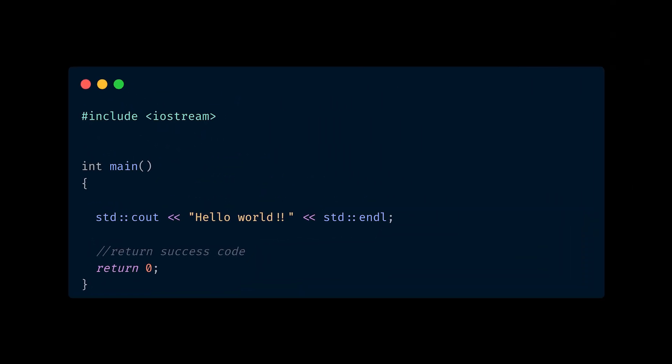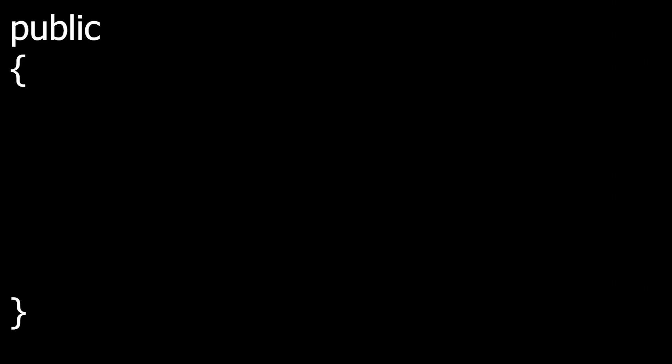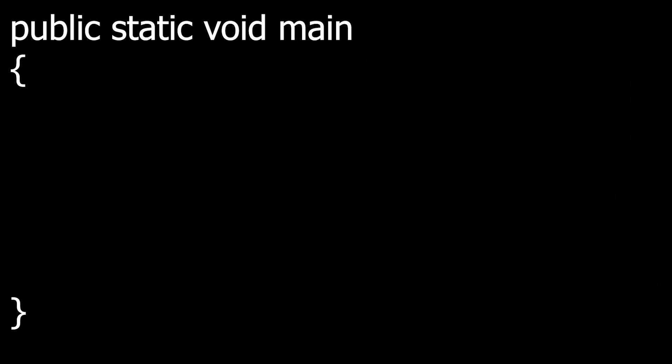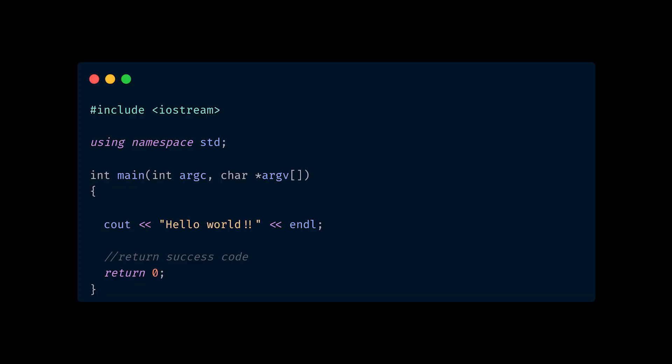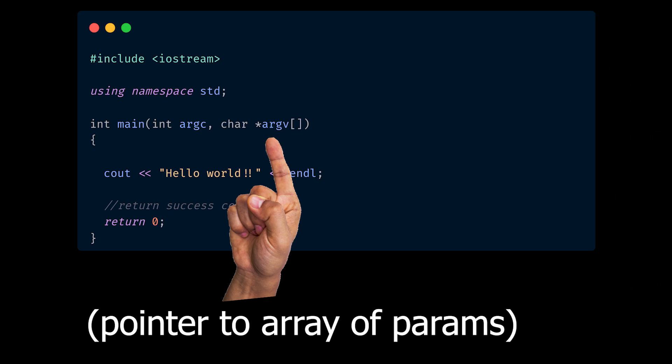Here's the main function of a C++ file. To write the main function — it is public static void main string — just kidding, I almost got you there. The main function is just a function called main, and it returns an integer which is the exit code. You can also optionally give it parameters, which can be passed into a command shell environment when running the compiled code.